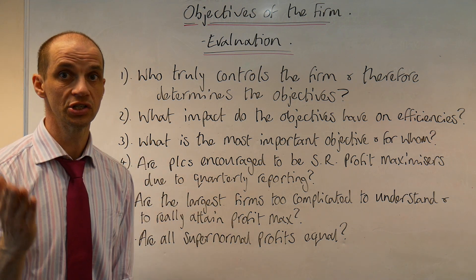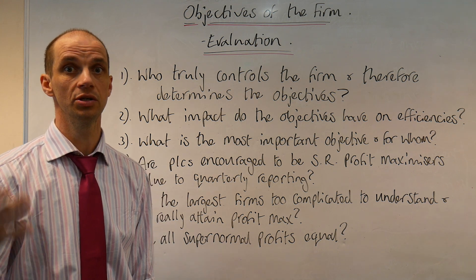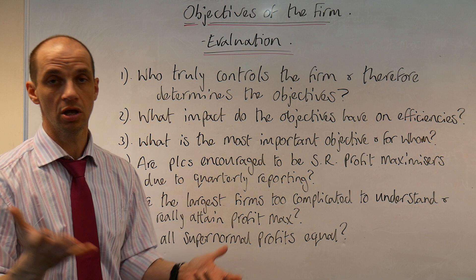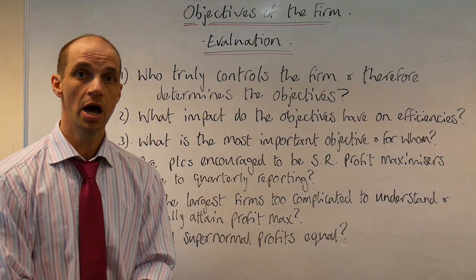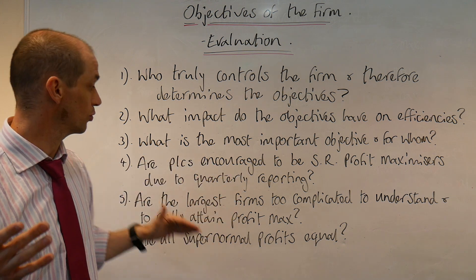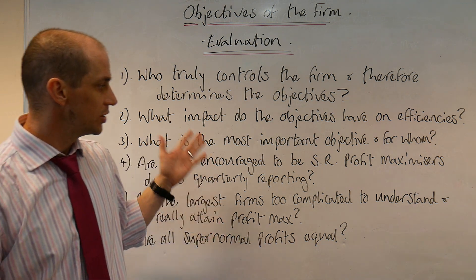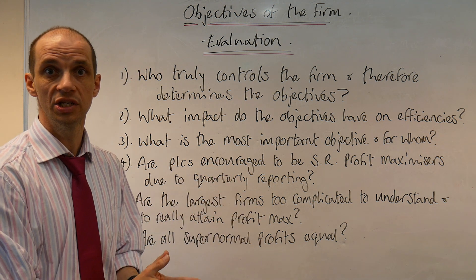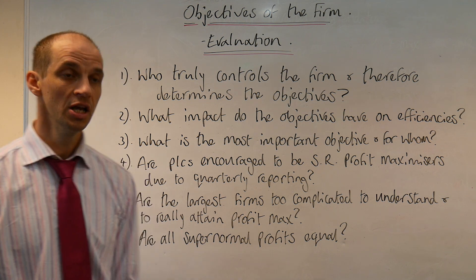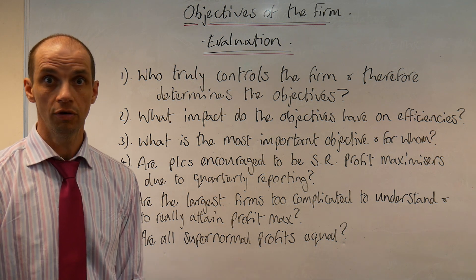Number four: are PLCs encouraged to actually pursue short-run profit maximization because they have to engage in quarterly reporting to the markets? Public limited companies are the largest type of company — they float their shares on the stock market and the general public can buy and sell those shares. They have a responsibility to report to the markets every three months. Sometimes it's argued that quarterly reporting should be annual reporting to allow firms to actually pursue a longer-term focus on profit maximization. So is there a culture which encourages short-term profit maximization, and is that to the detriment of society?